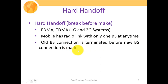This is the specification of FDMA and TDMA based 1G and 2G systems. This type of handoff is mainly used in GSM based systems, and nowadays it is also present in UMTS and 4G cellular systems.